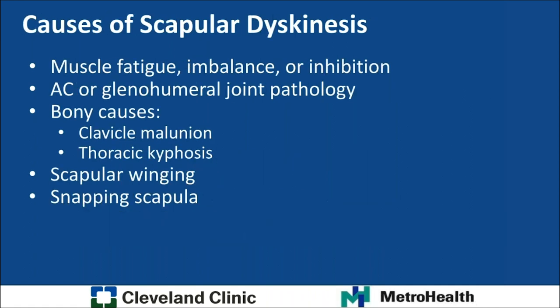For scapular dyskinesis, the major causes include: muscle fatigue, imbalance, or inhibition — especially in athletes. Pathology in the AC or glenohumeral joints can also lead to scapulothoracic problems. Bony causes include clavicular malunion, thoracic kyphosis, and even osteochondromas on the scapula that can inhibit function. Today I'll discuss in more detail scapular winging and snapping scapula.